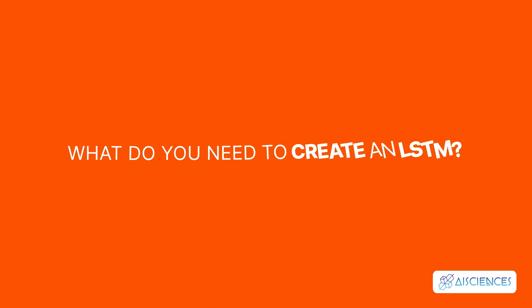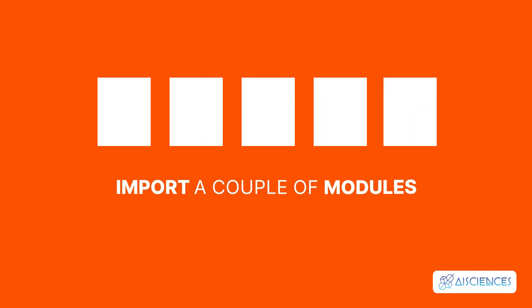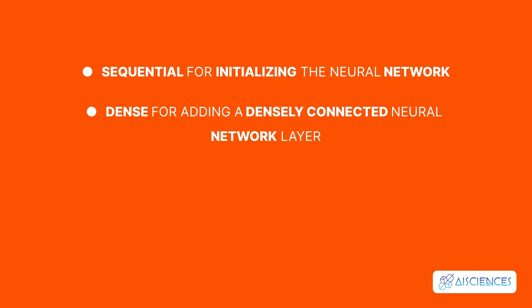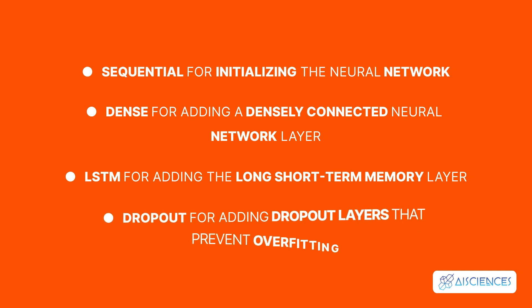But what do you need to create an LSTM? To create or build an LSTM, we need to import a couple of modules from Keras: Sequential for initializing the neural network, Dense for adding a densely connected neural network layer, LSTM for adding the long short-term memory layer, and Dropout for adding dropout layers that prevent overfitting.